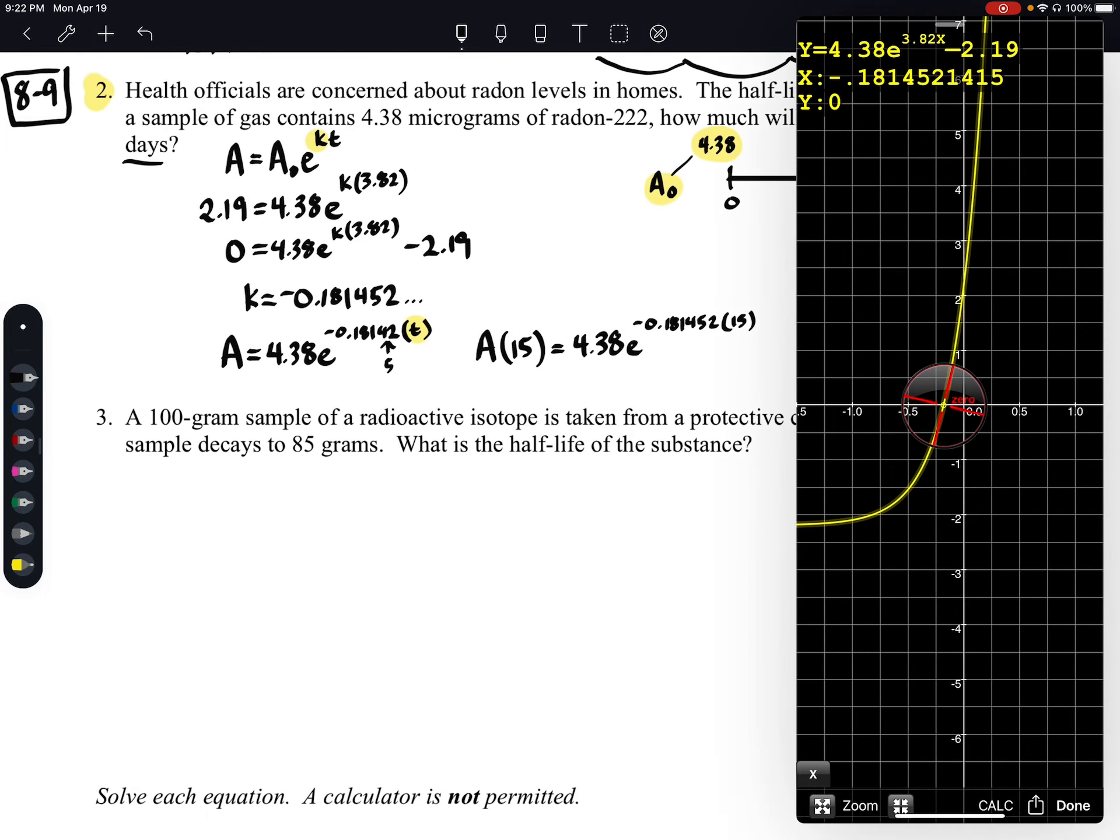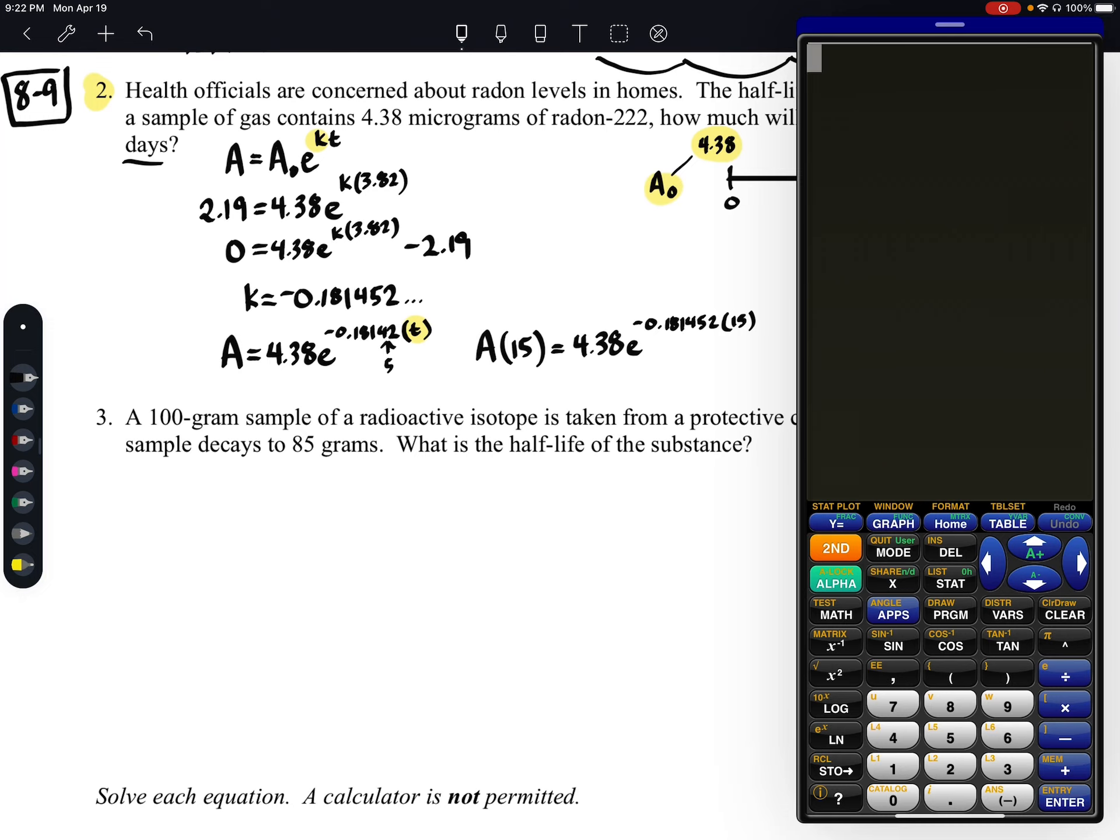So let's just go ahead and grab our calculator out. We'll just go into the calculator mode, and we'll say 4.38 times E raised to that power of negative 0.181452, and we're going to multiply that by 15, and what we'll get there looks like it's about 0.288 micrograms, so A of 15 would equal about 0.288 micrograms.